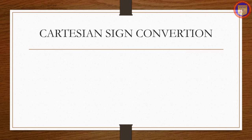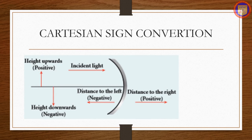Cartesian sign convention: incident light is taken as traveling from left to right. All distances are measured from the pole of the mirror. Distances measured to the right of the pole along the principal axis are positive; distances measured to the left are negative. Heights measured upward from the principal axis are positive, and downward are negative. These conditions are used to derive the mirror equation.